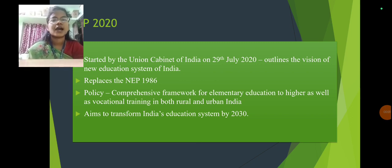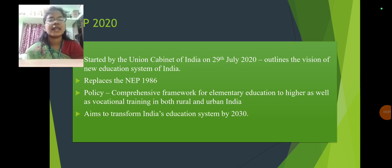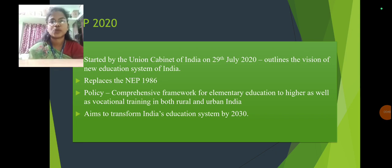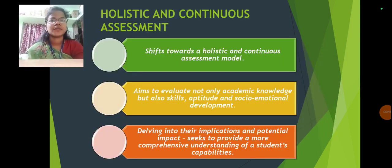The policy provides a comprehensive framework for elementary education up to higher education as well as vocational training in both rural and urban India. It aims to transform India's education system by 2030.